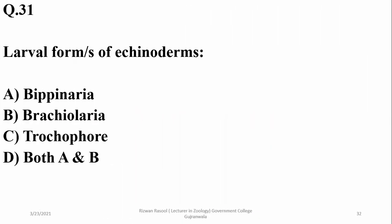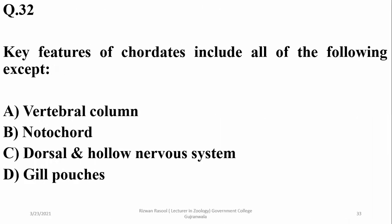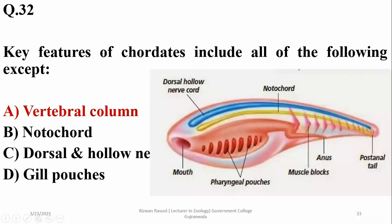Question twenty-four: the larval forms of echinoderms are bipinnaria and dipleurula — right option is delta. Key features of chordates include all of the following except the vertebral column, because the vertebral column is not found in all chordates. Chordates have pharyngeal pouches or gill pouches, a dorsal hollow nervous system, and a post-anal tail. The vertebral column is a feature of the subphylum Vertebrata only.